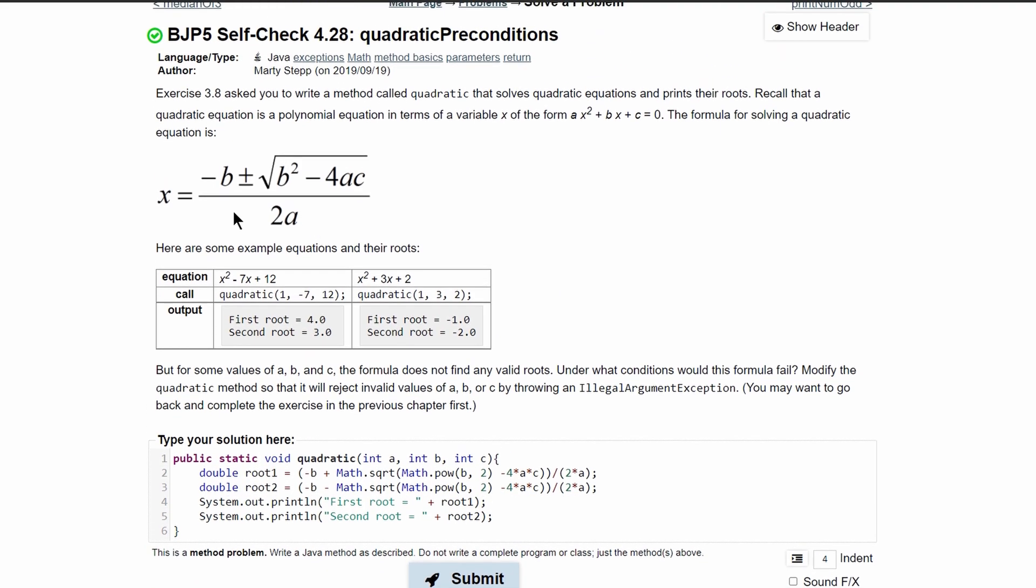When we look at a quadratic equation, what are the things that could go wrong? Well, the first thing that could go wrong is if all of these values inside of our square root are negative.